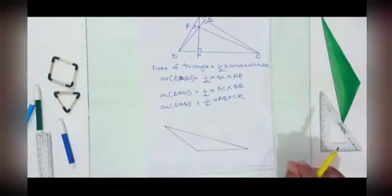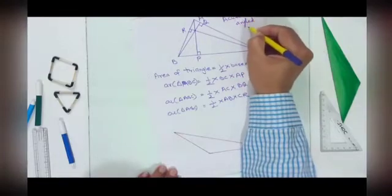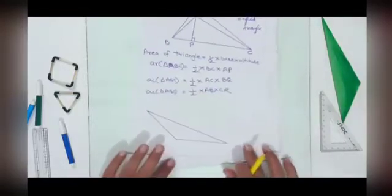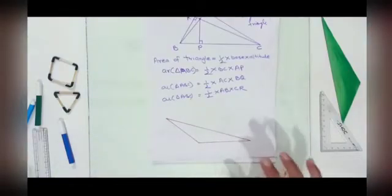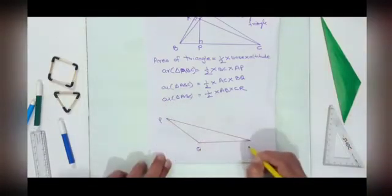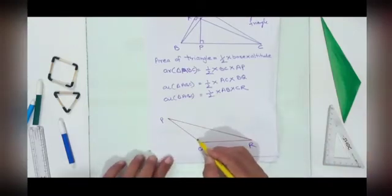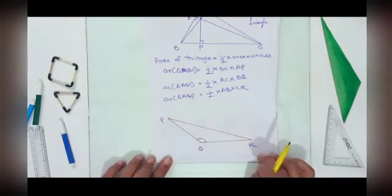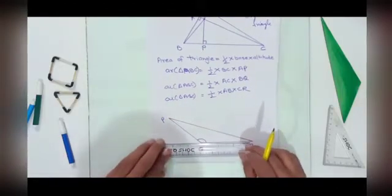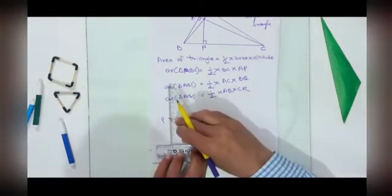Now in this triangle, as it is an acute angle triangle, the orthocenter lies inside. If I consider an obtuse angle triangle, it is not necessary that the altitude lies within the triangle — it may lie outside in the exterior. Suppose this is triangle PQR where angle PQR is an obtuse angle. If I draw a perpendicular from P to QR, the altitude lies outside the triangle.